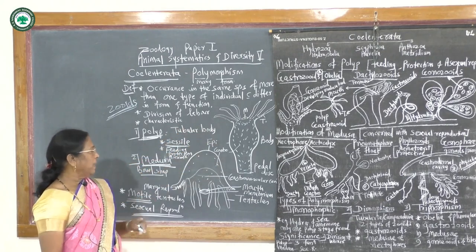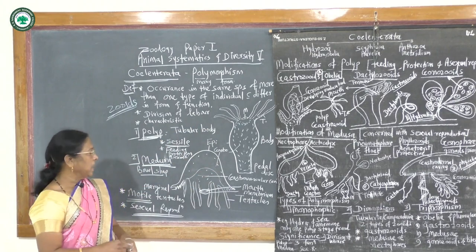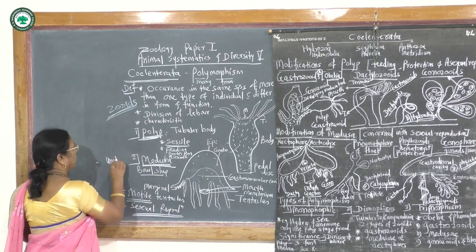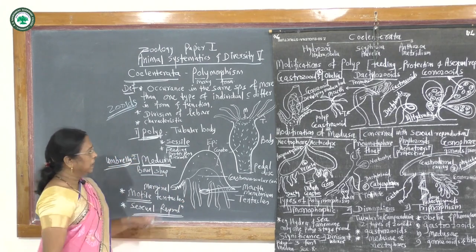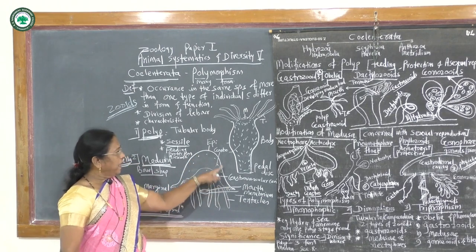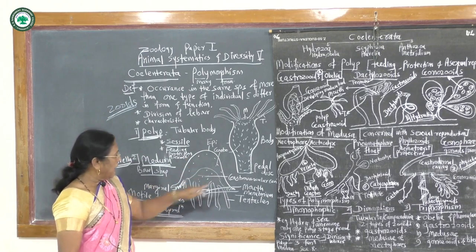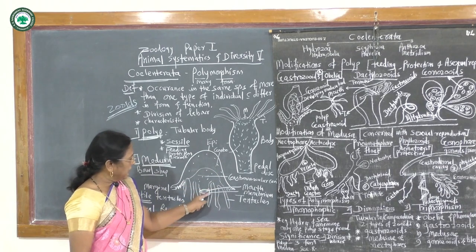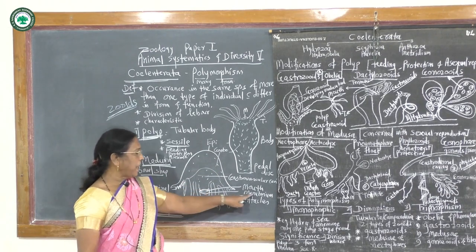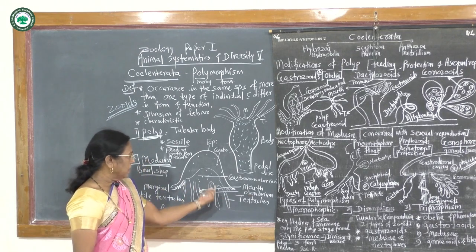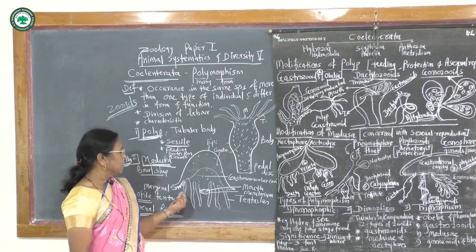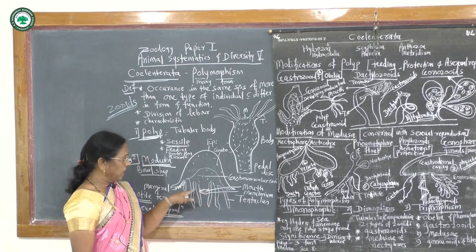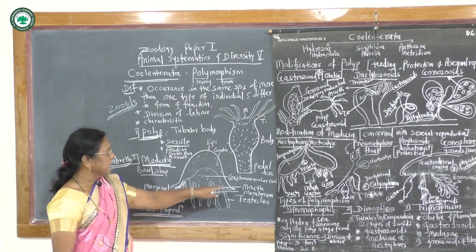Medusa has a bowl-shaped or umbrella-shaped body. The upper end is convex and the ventral end is concave, which shows the mouth surrounded by a thin membranous structure called the manubrium. The ventral concave side shows marginal tentacles, and larger tentacles surround the mouth — the ones surrounding the mouth are larger and marginal tentacles are smaller.